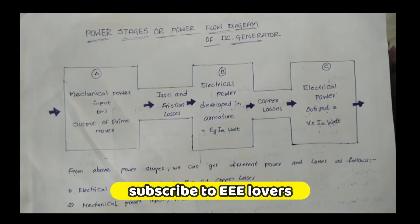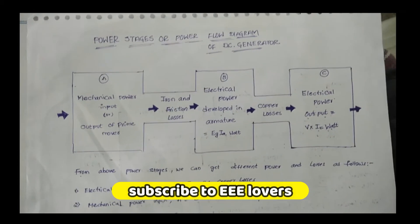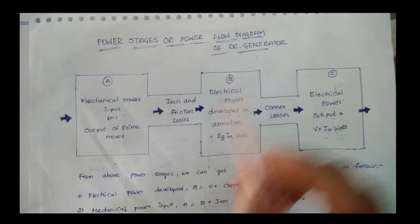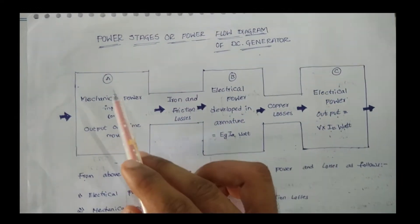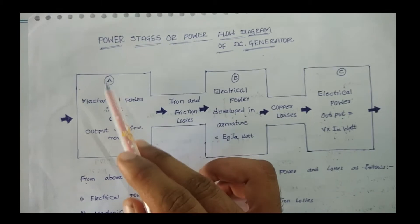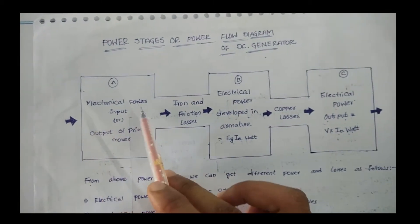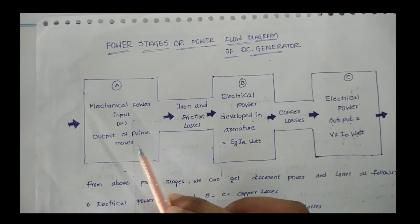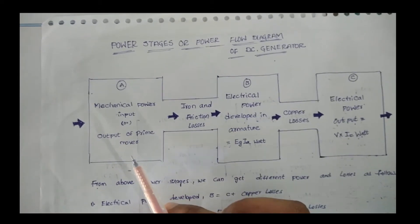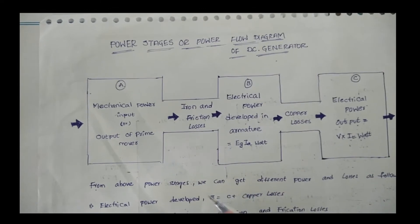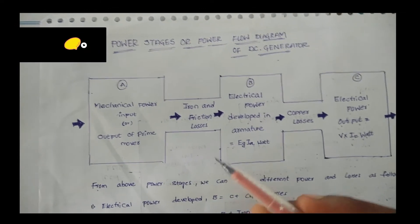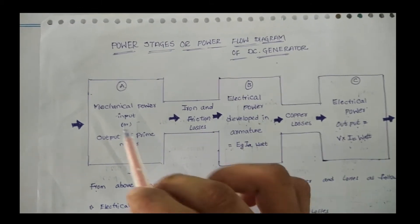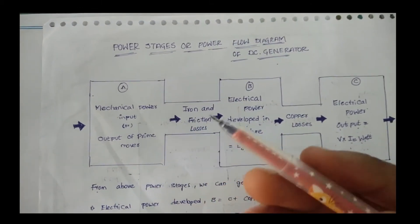Today I am going to discuss the power structure and power flow diagram of a DC generator. The first section, A, represents the mechanical power input — the input from a prime mover. Using a motor or any other prime mover, we can generate mechanical power as the mechanical input to our generator.